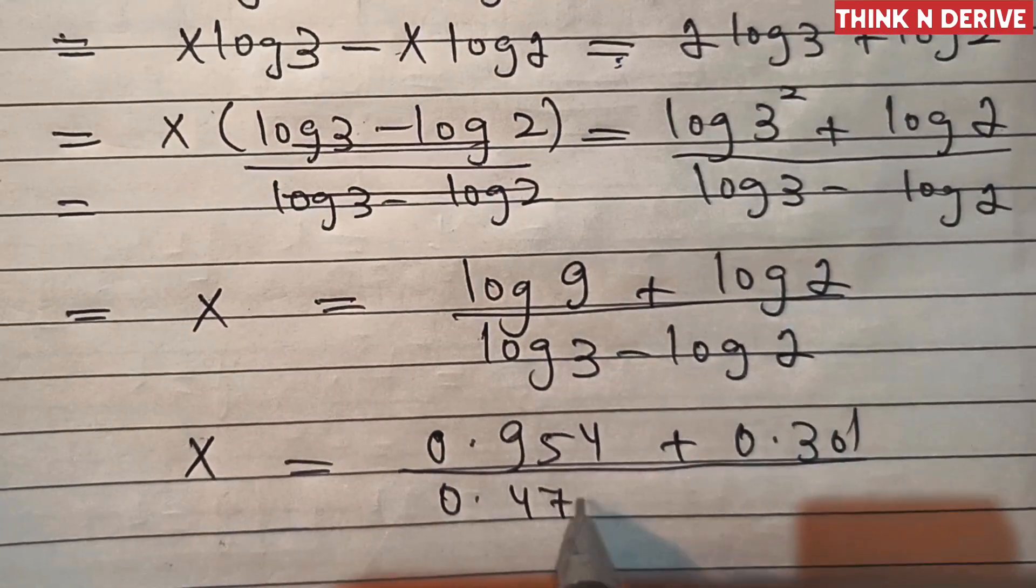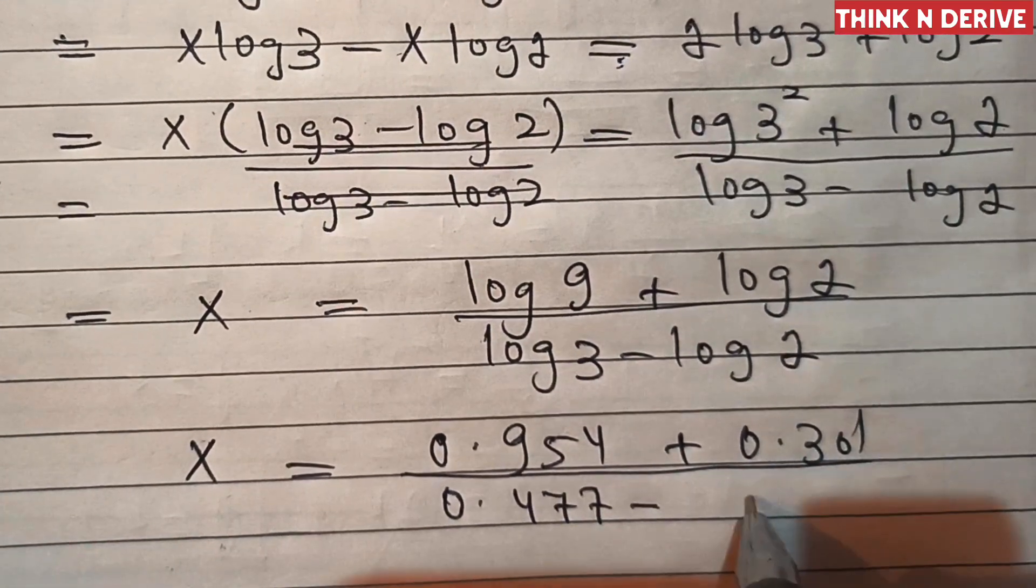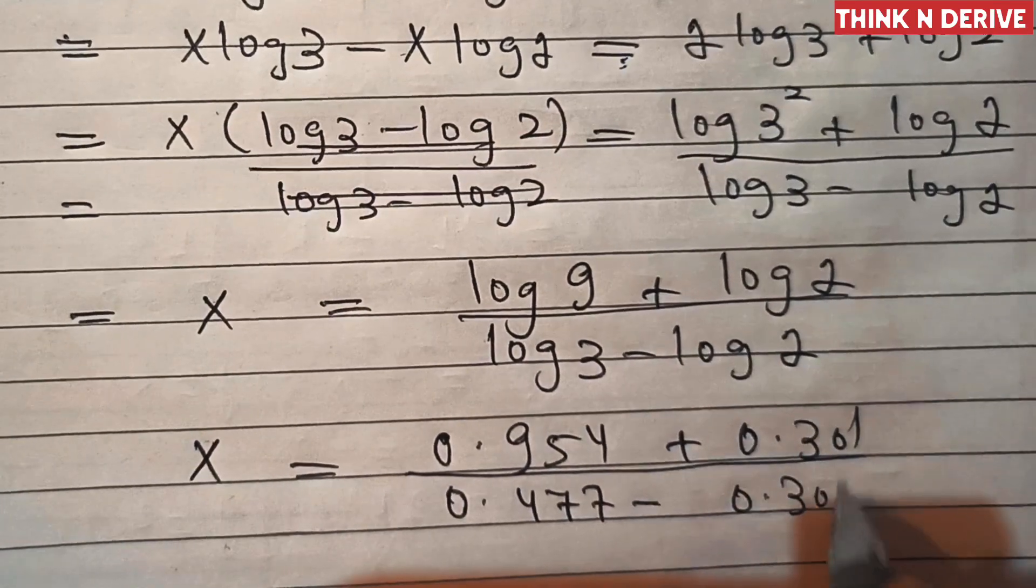So that means x is equal to, now add these, we'll get 1.255.